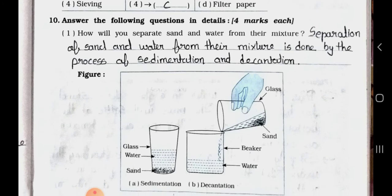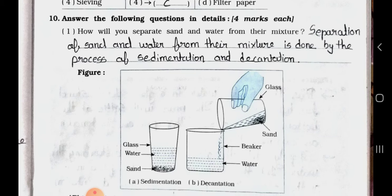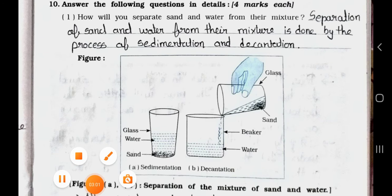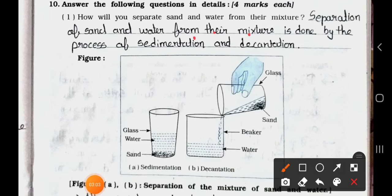See question number 1: How will you separate sand and water from their mixture? Answer: Separation of sand and water from their mixture is done by the process of sedimentation and decantation.